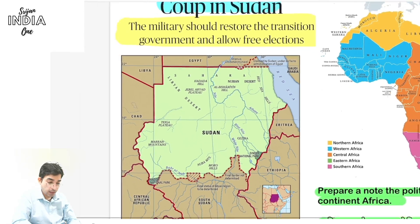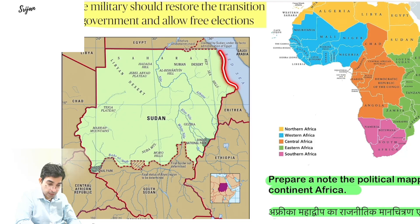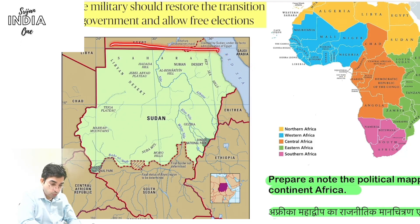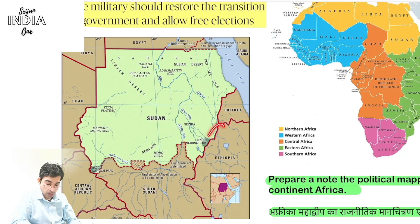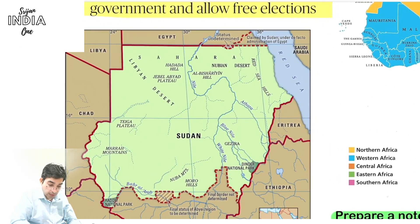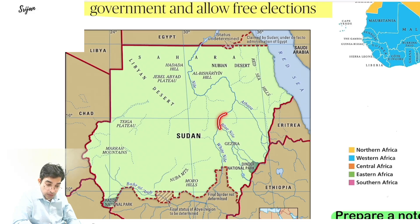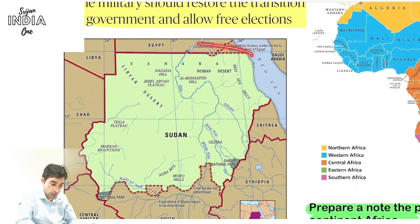Regarding Sudan's geography: it borders the Red Sea, Egypt is above it, then Libya, Chad, Central African Republic, South Sudan below, and Ethiopia. The Blue Nile and White Nile meet here, and there are disputes over dams built on them. The Nile goes up through Egypt into the Mediterranean. There is also the Libyan Desert and Nuba Mountains in this region.